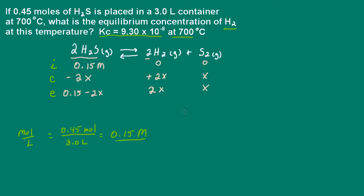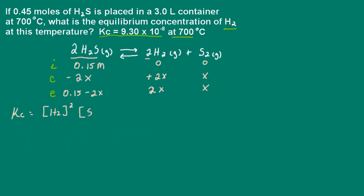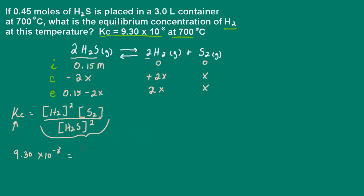Now let's write out our equilibrium constant expression. K equals the concentrations of products — hydrogen squared times sulfur — divided by the concentration of H2S squared, since coefficients become exponents. We know Kc is 9.30 times 10 to the negative 8, and that equals this expression.